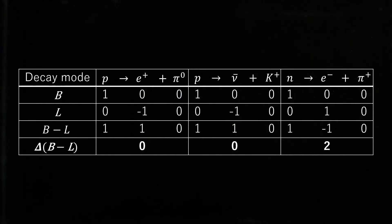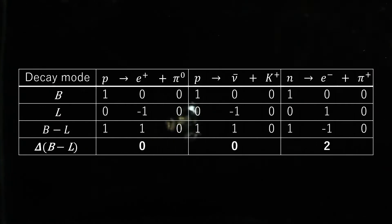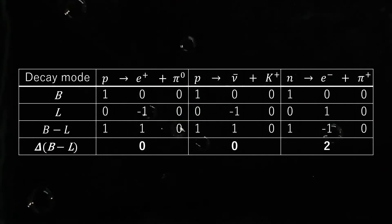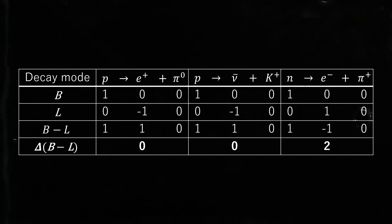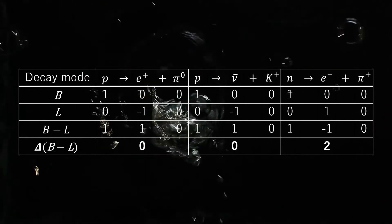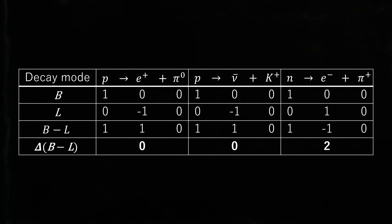One hypothetical example is proton decay where proton would decay into a neutral pion and positron. This proton decay conserves B minus L, even though it violates both lepton number and baryon number conservation.